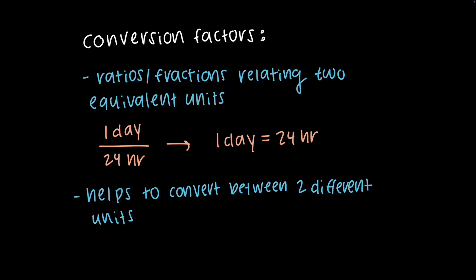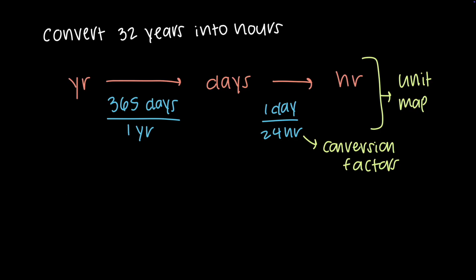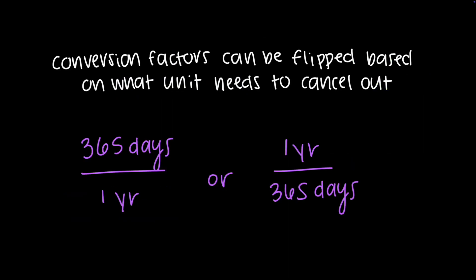Conversion factors are ratios or fractions that express how one unit of measurement is related to another. They are used in dimensional analysis to convert values from one unit to another without changing the actual quantity. There are 365 days in one year and 24 hours in one day. Now that I know the plan for converting from years to hours, I'm going to set up all the conversion factors with the beginning value so they cancel out. Always start with the given value because it is specific to the problem you are solving.